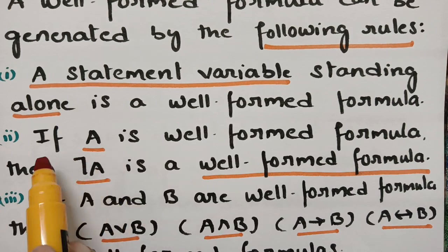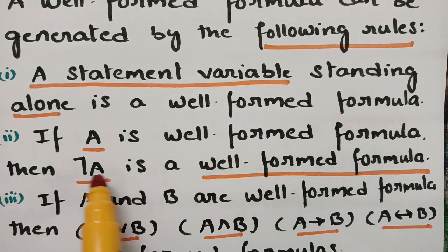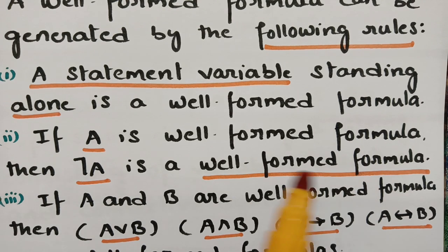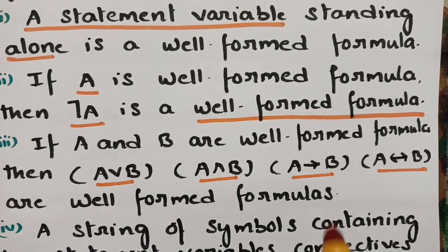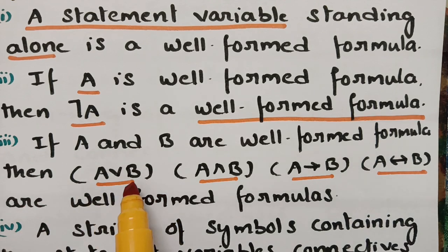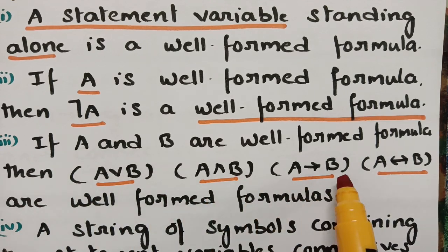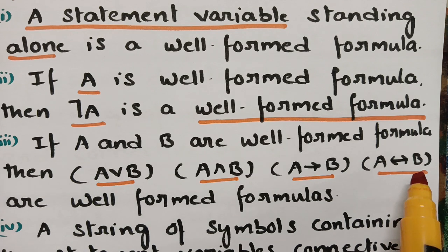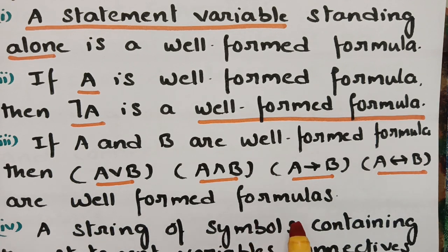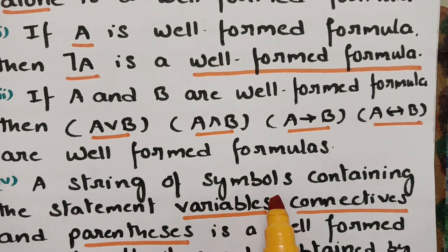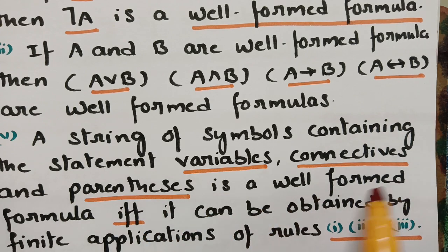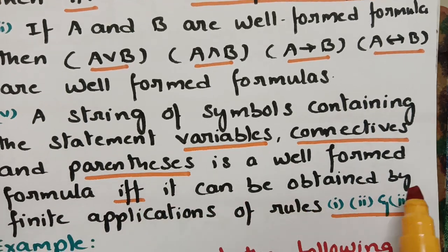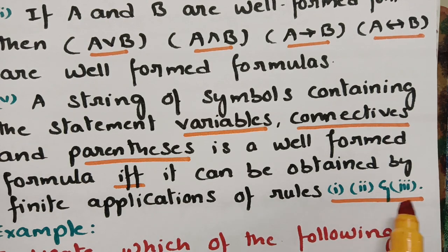Rule 2: if A is a well-formed formula, then negation A is also a well-formed formula — so a negated statement is also a WFF. Rule 3: if A and B are well-formed formulas, then A or B, A and B, A implies B, and A if-and-only-if B are all well-formed formulas. Additionally, a string of symbols containing statement variables, connectives, and parenthesis is a well-formed formula if it can be obtained by finite applications of rules 1, 2, and 3.